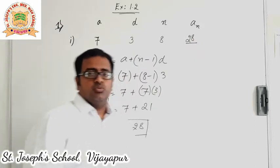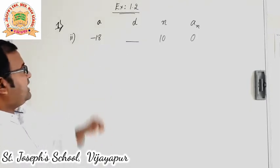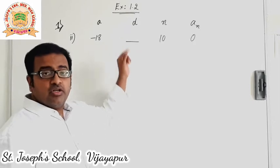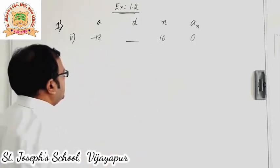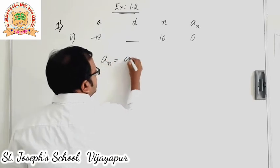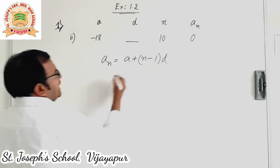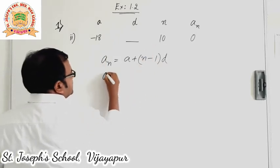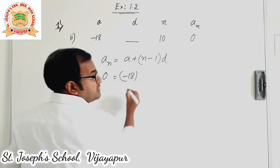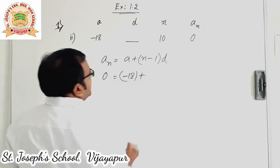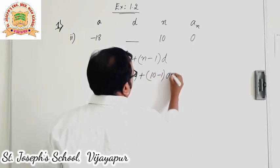Let us go to sub question 2. Here a is minus 18, we need to find out d, n is 10, and the last term is 0. I use the an formula: an is equal to a plus n minus 1 into d. The an value is already given as 0, which is equal to minus 18 plus n minus 1, which is 10 minus 1, into d. The d value we don't know, we will keep it as it is.